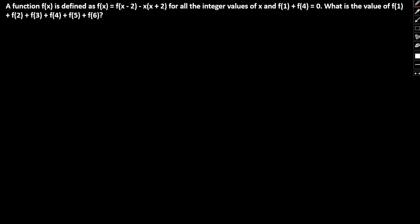The function f(x) is defined as f(x) = f(x - 2) - x(x + 2) for all integer values of x, and f(1) + f(4) = 0. What is the value of f(1) + f(2) + f(3) + f(4) + f(5)?